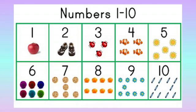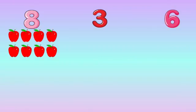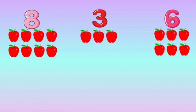Now let us take any 3 numbers from 1 to 10 and play a game. The numbers are 8, 3, 6. Now number 8 has 8 apples, number 3 has 3 apples, and number 6 has 6 apples. So what will we do? Yes, we will arrange the numbers from small to big.